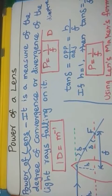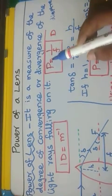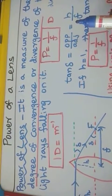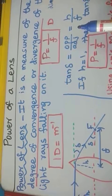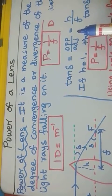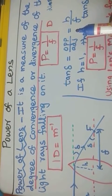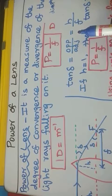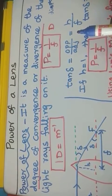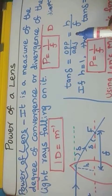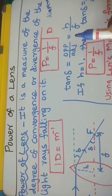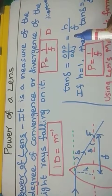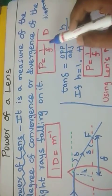The power of a lens is the reciprocal of focal length. Hence, the smaller the focal length of the lens, more is the ability to bend the light rays and greater its power.